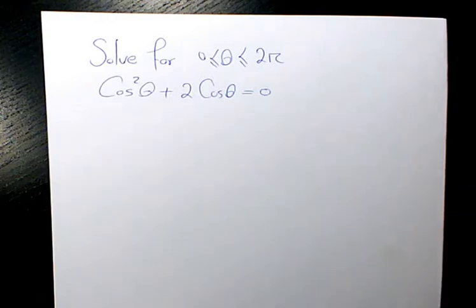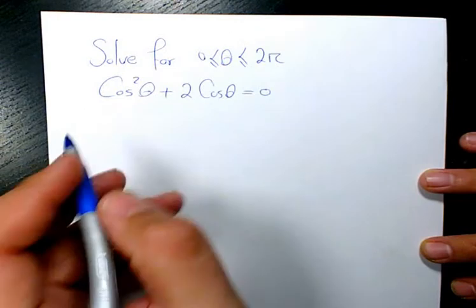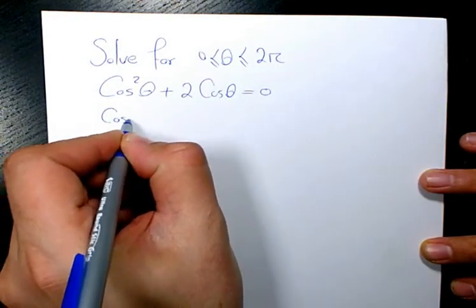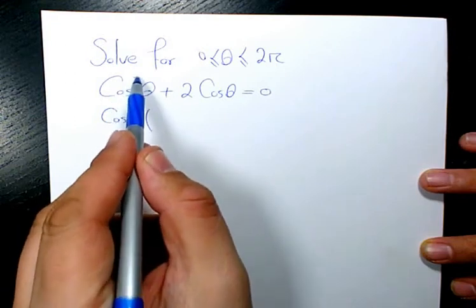I'm gonna factor cosθ because that's common between these two terms. You have cosθ. When you factor it, cos²θ divided by cosθ will be cosθ.